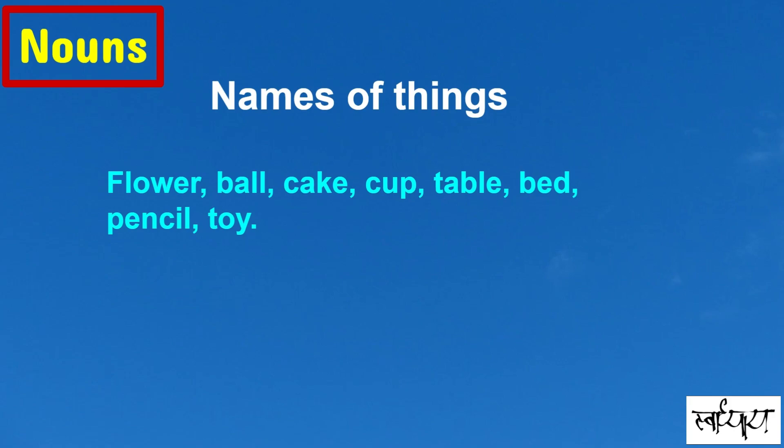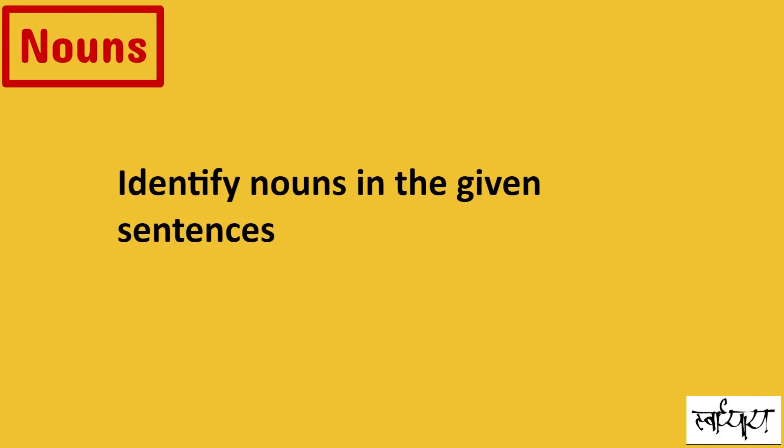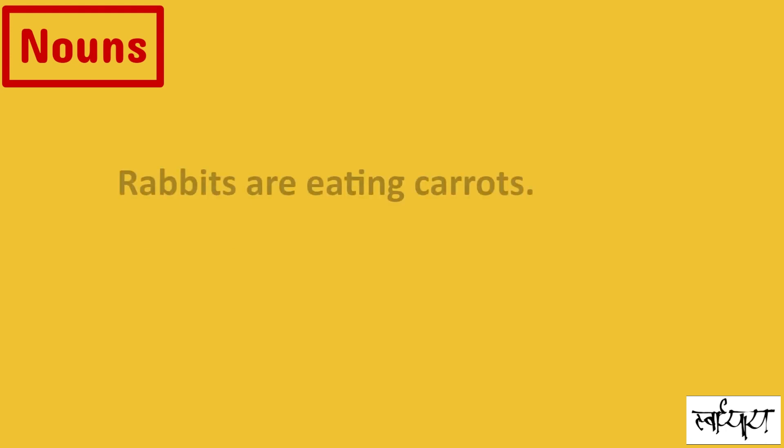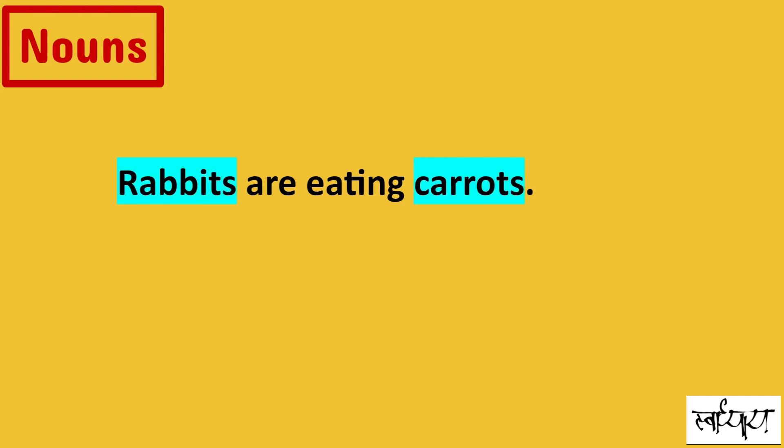Now identify nouns in the given sentences. Rabbits are eating carrots. Rabbits is the name of an animal and carrot is a thing. So rabbits and carrots are nouns.